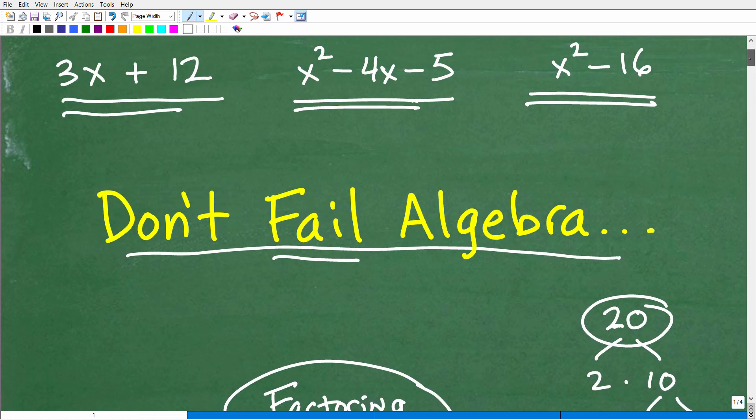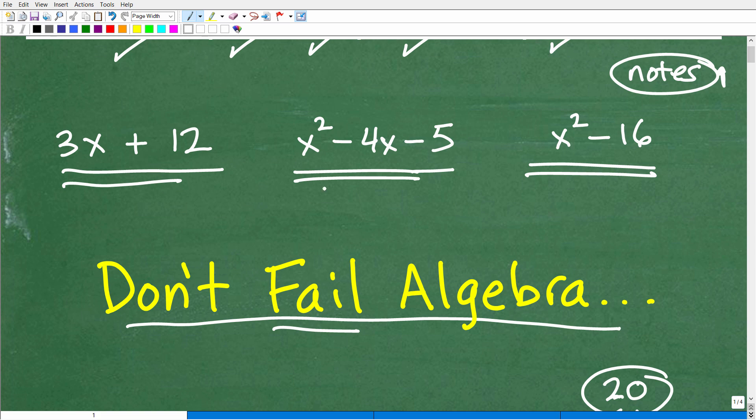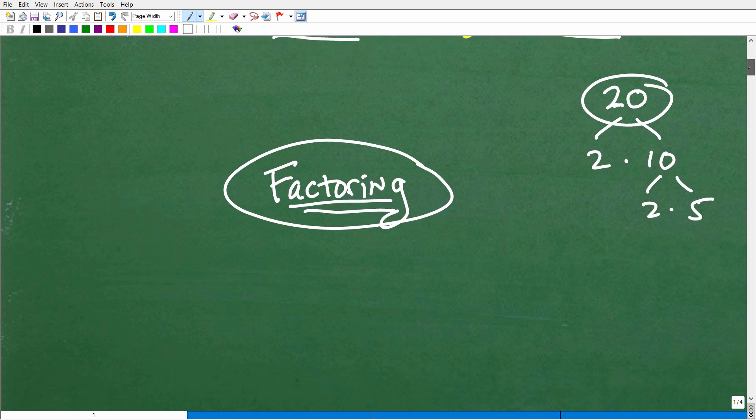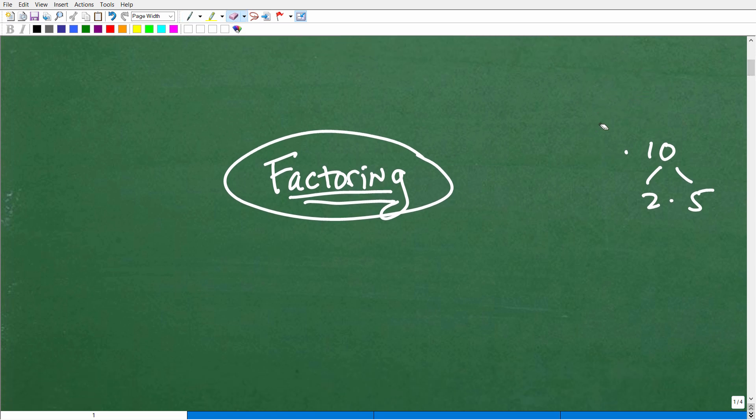But here we're factoring a number. But in algebra, you have to factor these kind of things. These algebraic expressions. And there's basically multiple different skills that you'd need to be able to factor everything you're going to be facing in algebra. So let's just quickly kind of organize our thoughts and then we'll go through these problems. So the first is the greatest common factor. You've got to know how to deal with the greatest common factor.